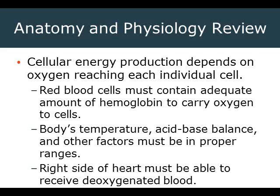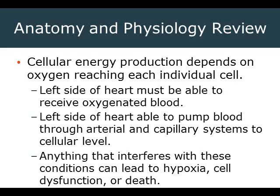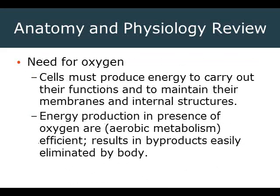The body's temperature and acid-base balance must be in the proper range. If the temperature is off, we burn things quicker. If the acid-base is thrown to an extreme, oxygen doesn't like to attach well to hemoglobin. The right side of the heart must receive deoxygenated blood and move it to the lungs; the left side must receive oxygenated blood and pump it out through the arterial and capillary system to the cellular level. Anything that interferes with those conditions leads to hypoxia, cellular dysfunction, and death.